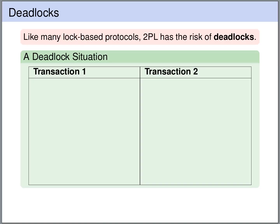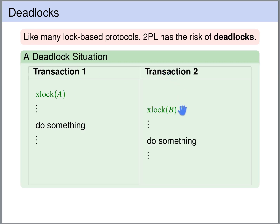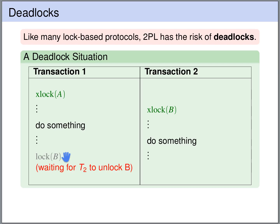To understand what deadlocks are, let's consider the following scenario. Transaction 1 obtains an exclusive lock on A. Concurrently, transaction 2 obtains an exclusive lock on B. Now after some time, transaction 1 wants to obtain some lock on B — shared or exclusive doesn't matter. This lock will be blocked because transaction 2 has an exclusive lock on B, so no other locks are allowed. Therefore transaction 1 will have to wait until transaction 2 unlocks B.